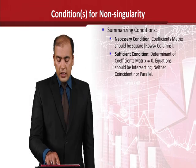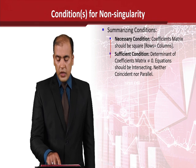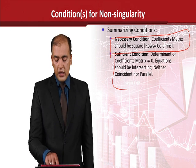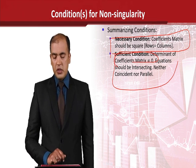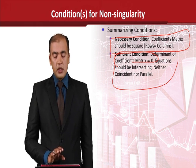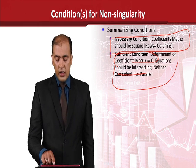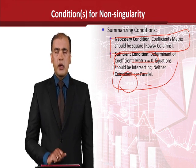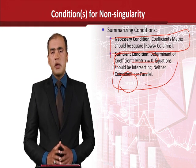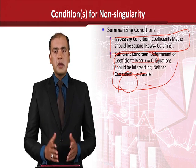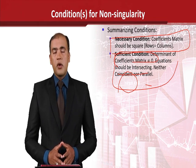Let us summarize the conditions of singularity versus non-singularity. If the matrix is non-singular, it has to be a square matrix where the number of rows equals the number of columns, and the determinant of the coefficient matrix must not be zero. The equations should be intersecting — neither coincident nor parallel. This way, we have understood the conditions for singularity versus non-singularity of a matrix. Thank you.